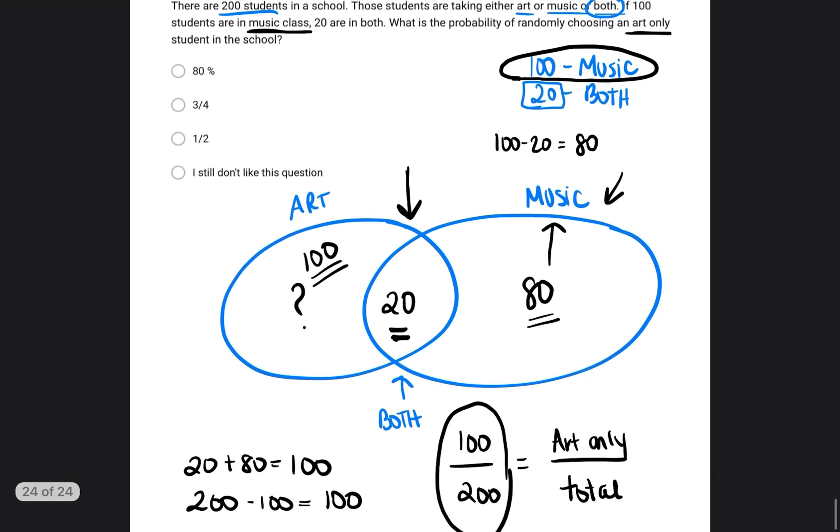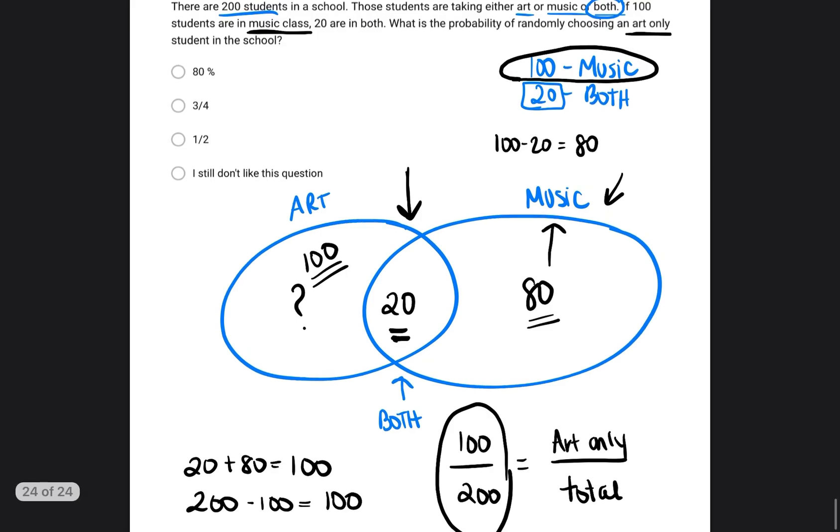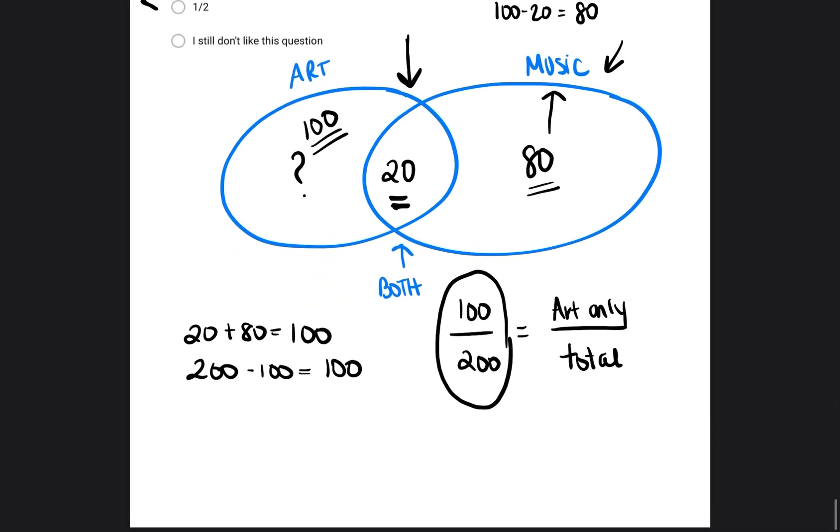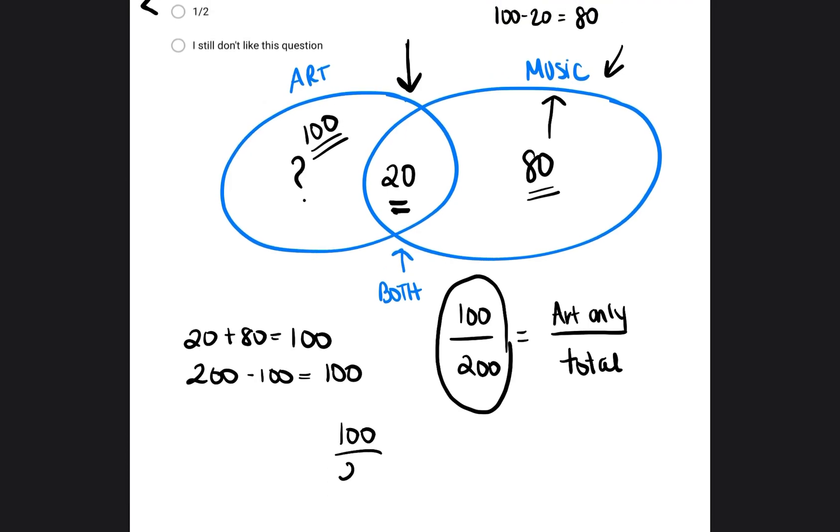But if you look at the answers, none of the answers are 100 over 200. And so it gives us an idea that we're either going to have to convert it into a percentage, or we're going to have to reduce it into a smaller fraction. So we're going to take 100 over 200, and I'm going to show you both ways. I'm going to show you how we can turn that into a decimal that we can turn into a percentage, and then I'm also going to show you guys how we could just reduce the fraction to see what our answer is going to be. So let's first talk about changing this into a decimal or a percentage. The reason why I want to teach you guys that is that probability either is going to give you an answer in a fraction form, a decimal form, or a percentage form. You can show probability in any three of those ways.